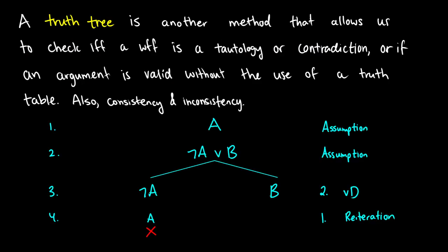So what is a truth tree? A truth tree gives us another method that allows us to check if a well-formed formula is a tautology or a contradiction, or if we have a valid argument. It also checks for things called consistency and inconsistency. So what I have here is an example of a truth tree, and I'm just going to use this example to go over some terms.